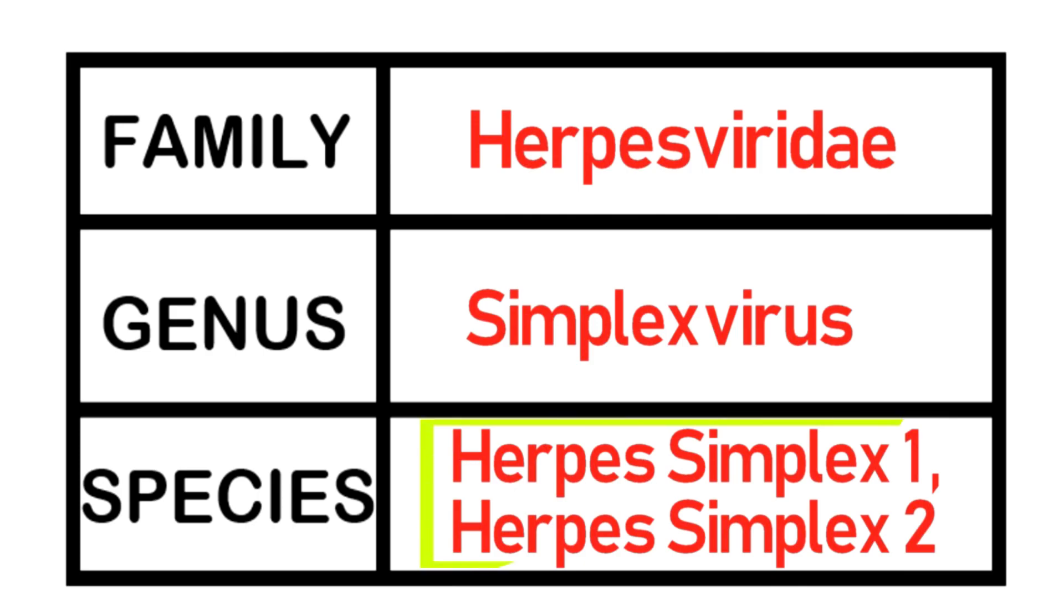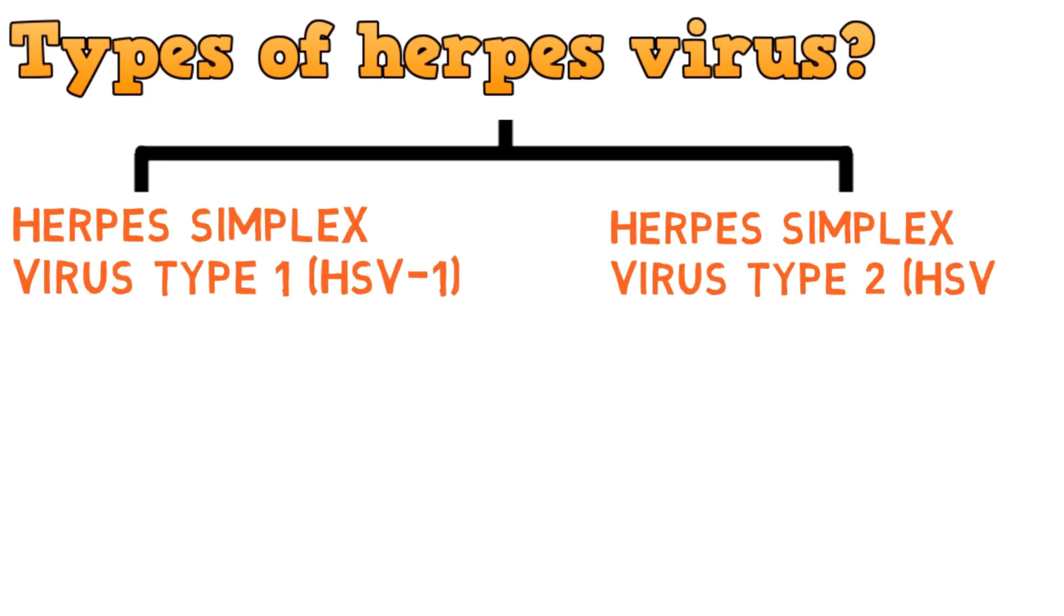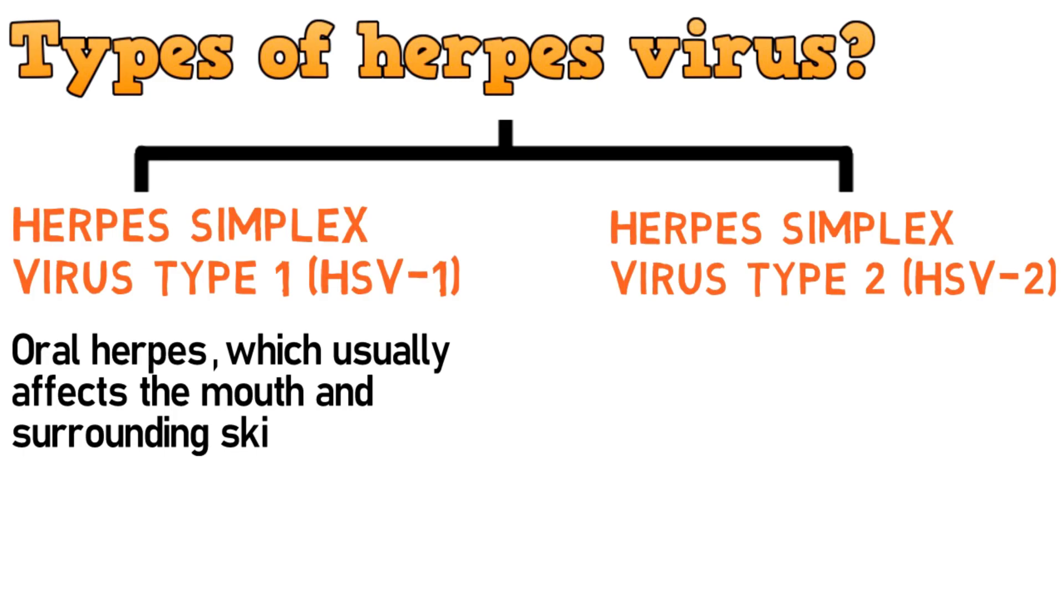As you can see, there are two types of herpes virus. Herpes simplex virus type 1 or HSV1 and herpes simplex virus type 2 or HSV2. HSV1 causes oral herpes, which usually affects the mouth and the surrounding skin. And HSV2 causes genital herpes.